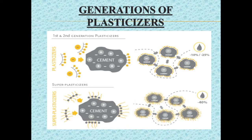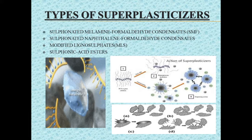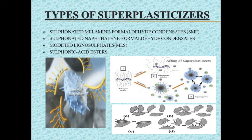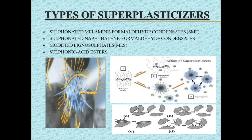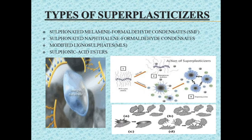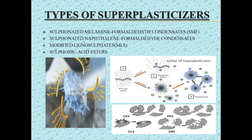Third generation superplasticizers show a steric effect rather than electrostatic repulsion. A steric effect prevents a chemical reaction from taking place — in this case, it prevents the cement particles from flocculating. The classifications of superplasticizers are: sulfonated melamine formaldehyde, sulfonated naphthalene formaldehyde, modified lignosulphonates, and sulfonic acid esters.